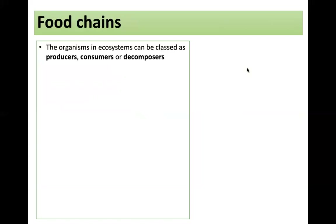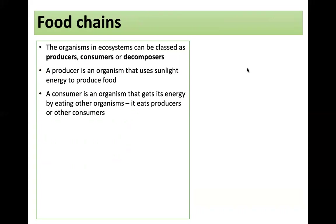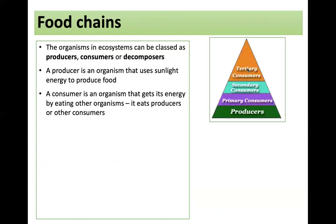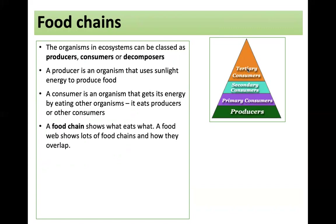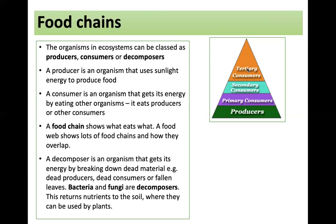Food chains are also found in ecosystems. Organisms within those ecosystems are classed as producers, consumers or decomposers. A producer is an organism that uses sunlight energy to produce food. A consumer is an organism that gets its energy by eating other organisms — it eats producers or other consumers. You can see here a very basic food chain with producers at the bottom, primary consumers, secondary consumers, and then right at the top, tertiary consumers. A food chain shows what eats what. A food web shows lots of food chains and how they overlap. A decomposer is an organism that gets its energy by breaking down dead material, like dead producers, dead consumers, or fallen leaves. Bacteria and fungi are decomposers.